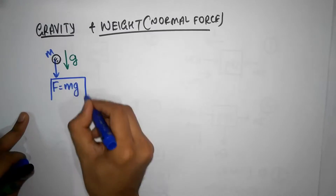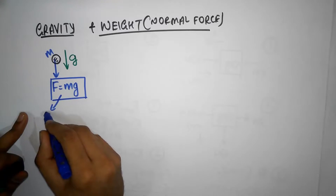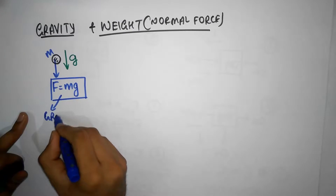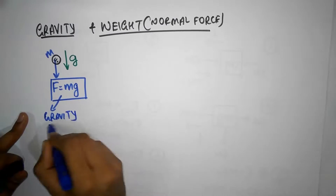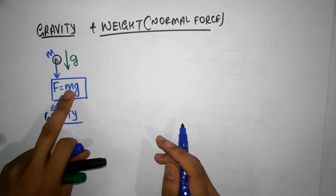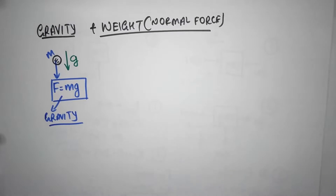That force from Newton's second law must be equal to mass times g. This is what we call gravitational force — this is gravity. Every time we want to calculate gravitational force, we just take mass and multiply it by g.